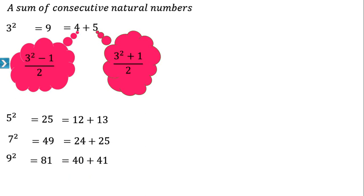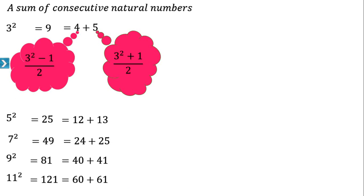So you can express any odd square number as the sum of two consecutive natural numbers. For 11², that is 121: (121 − 1) / 2 gives 120 / 2 = 60. So the numbers are 60 and 61. In this way we can express any square number as the sum of two consecutive natural numbers.